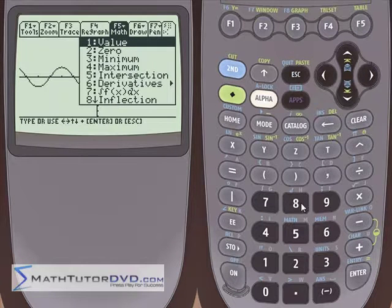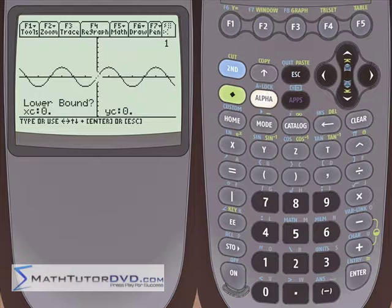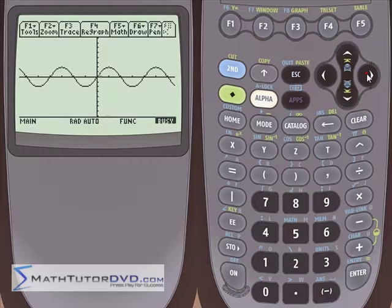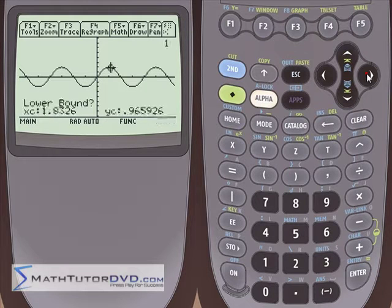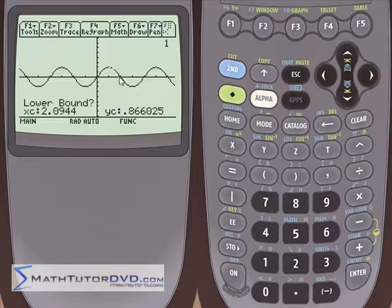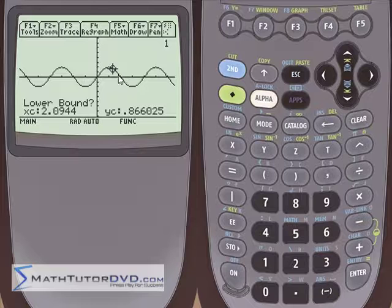Just go to number eight inflection. So what it's asking us for is the lower bound and the upper bound just like it always does for these graphing functions. What you need to do is find a lower bound which just means any point to the left of this inflection point. You do have to know what an inflection point is and you do have to be able to say okay, it's roughly right around there where it bends over.